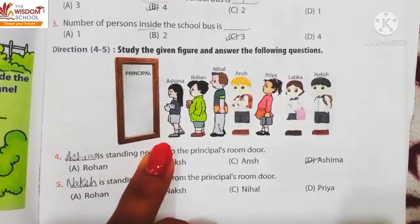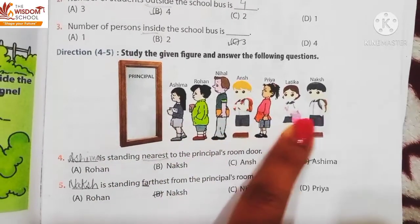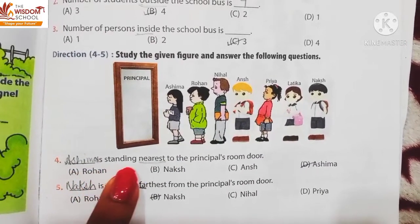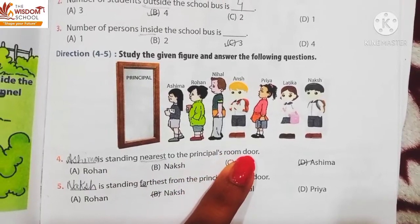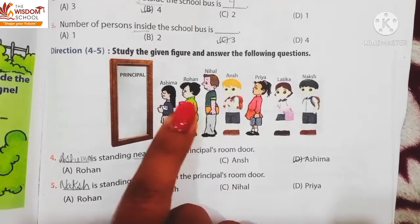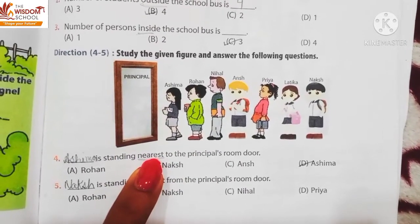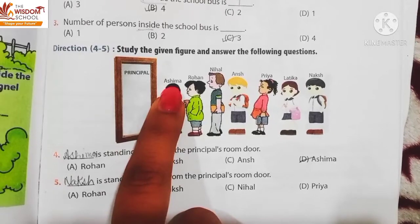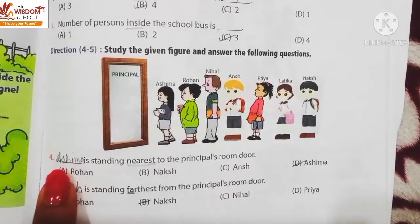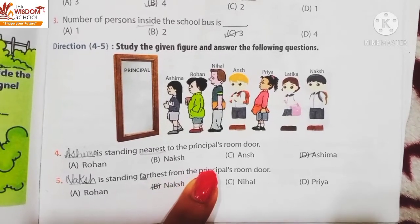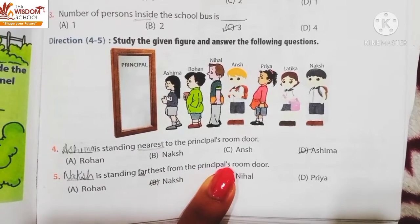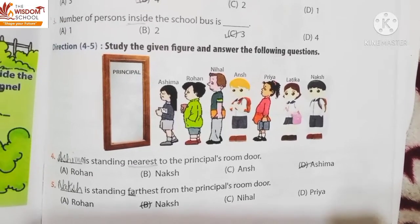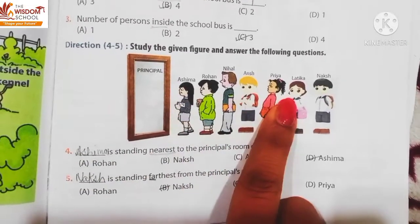Dekhi — yeh kya hai? Principal door hai, aur yeh students hain jo ek line mein khade hain. The question is: dash is standing nearest to the principal's room door. Principal room ki door ke sabse nearest — sabse paas — kaun hai? Ashima. Next: dash is standing farthest from the principal's room door. Far ka matlab duur, farthest ka matlab sabse duur. In sab mein se sabse duur kaun hai? Naqsh.